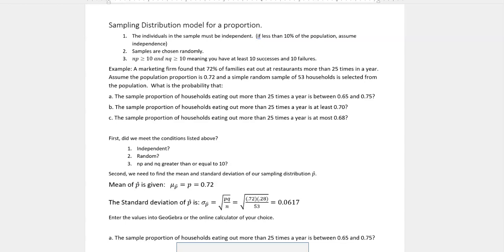Here's an example. A marketing firm found that 72% of families eat out at restaurants more than 25 times a year. Assume the population proportion is 0.72 and a simple random sample of 53 households is selected from the population.